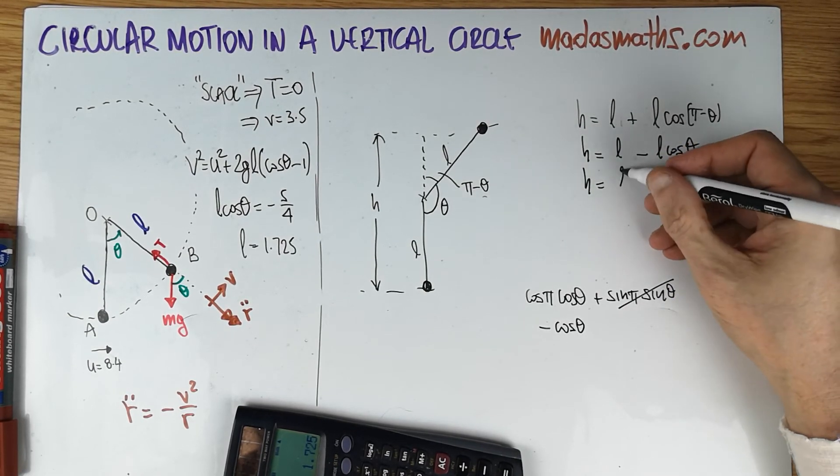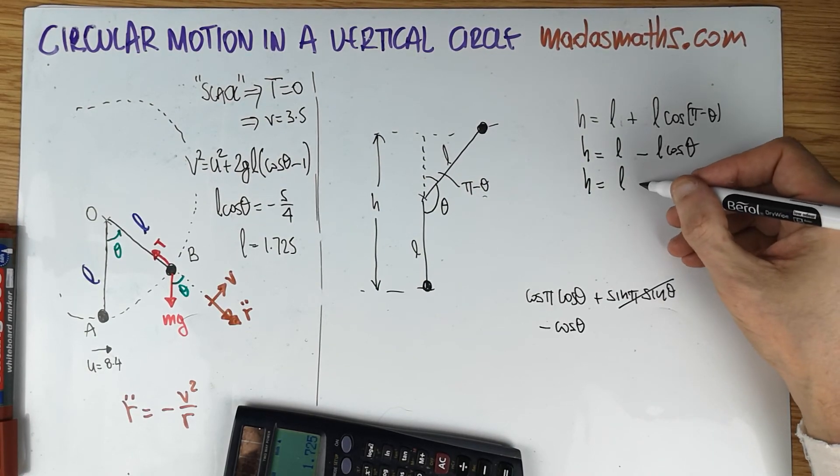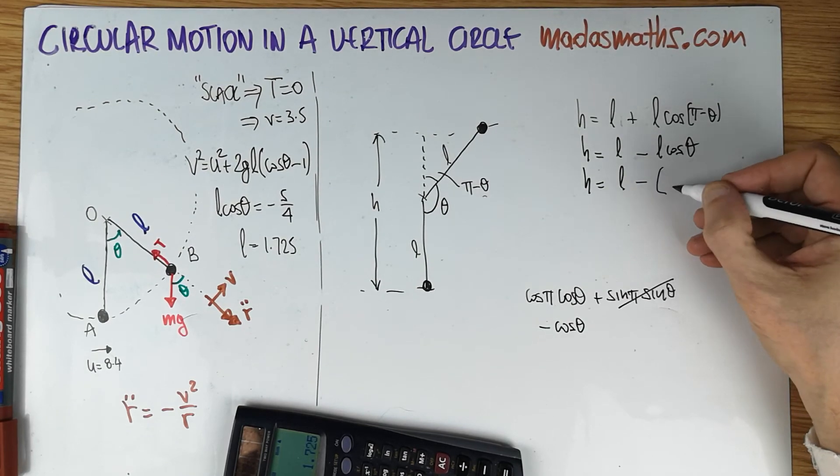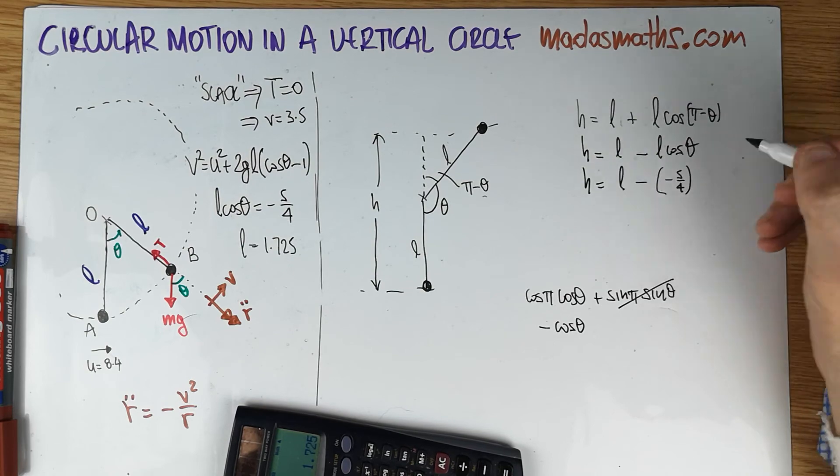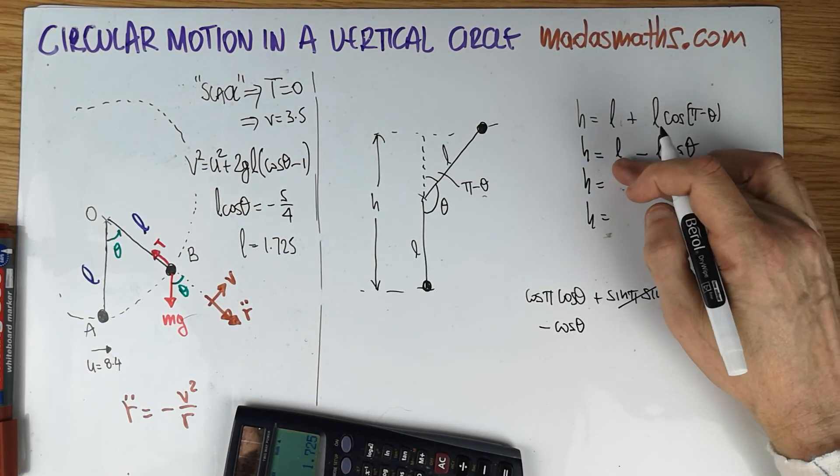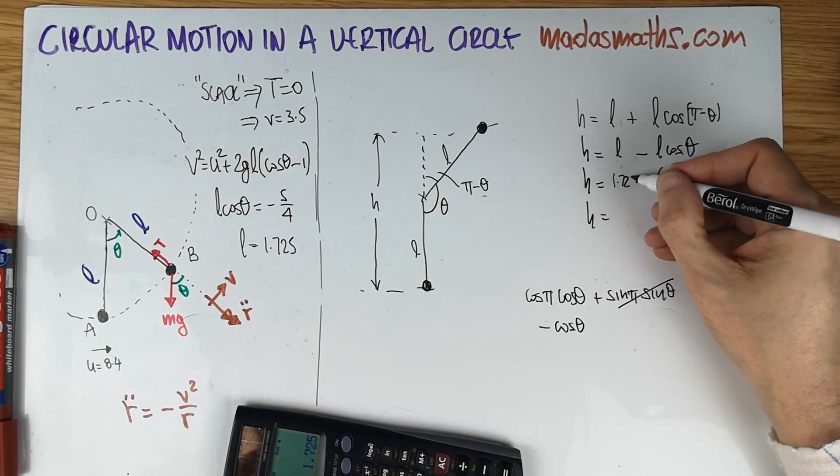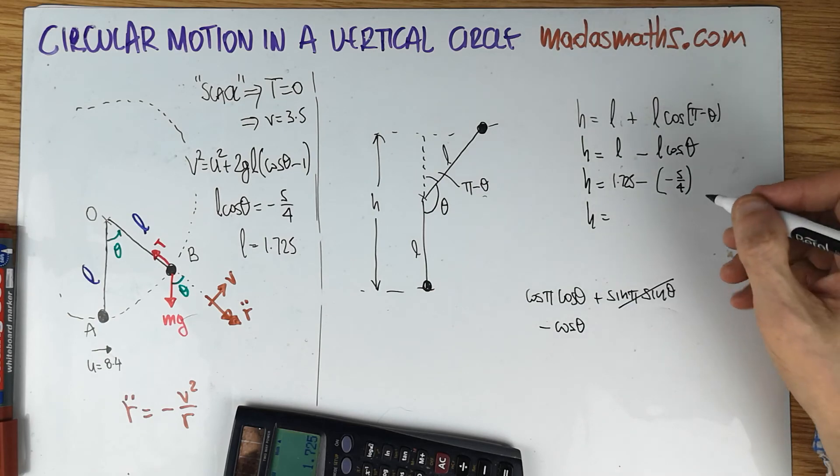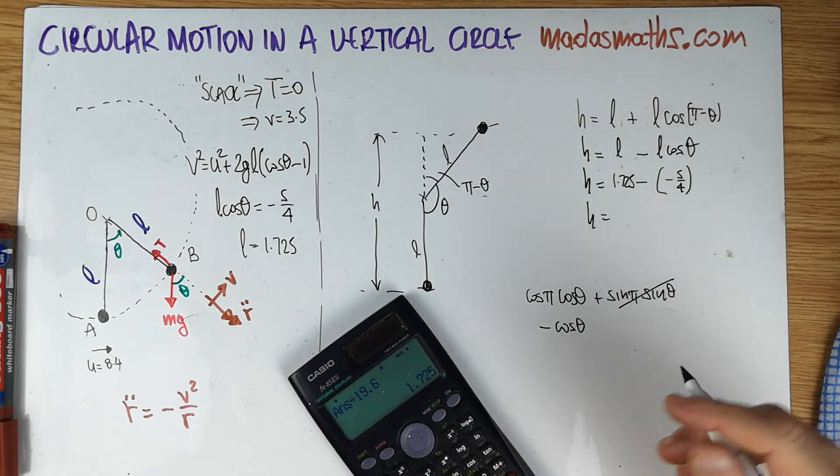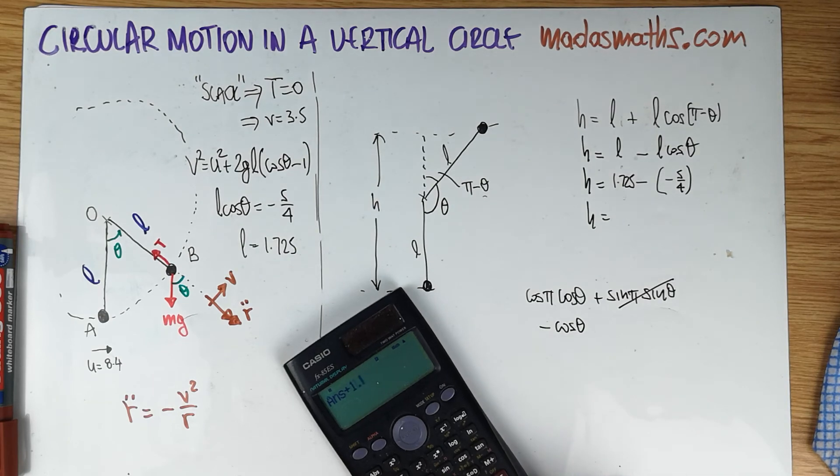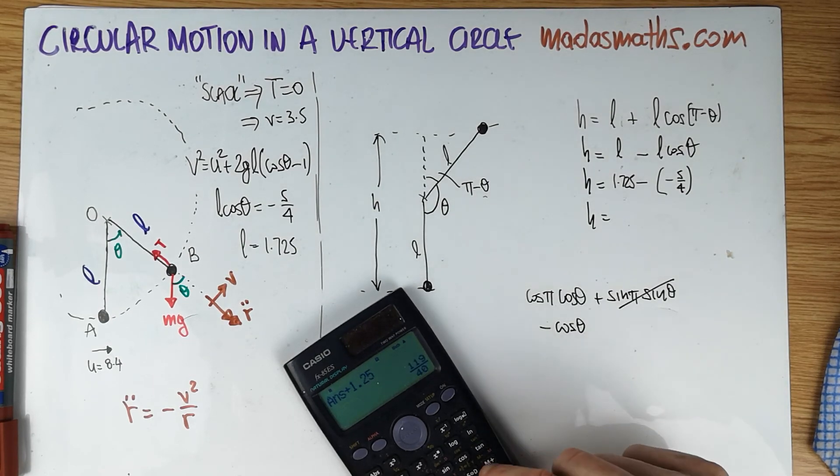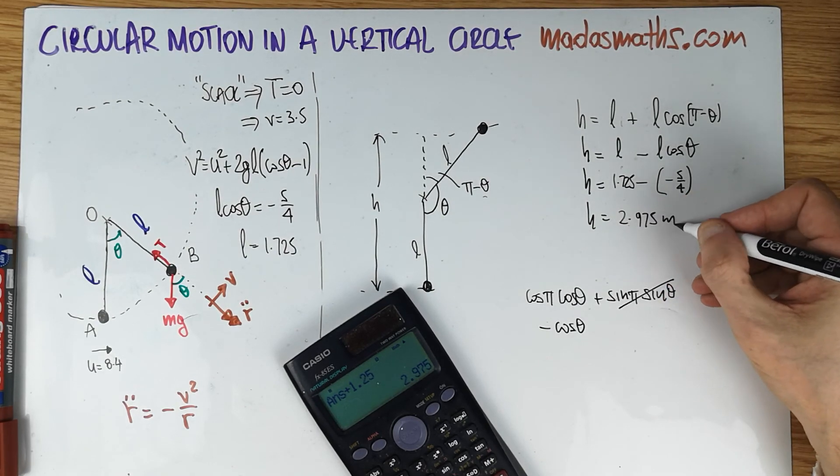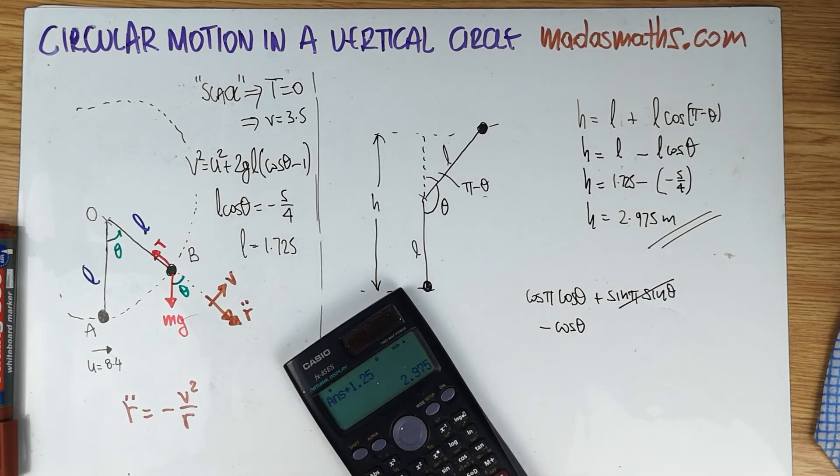And the H, of course, is L. And of course, L cos theta is minus 5 quarters. And L, I didn't put it in there. It's quite stupid really of me. This would be 1.725. And that combined was minus 5 quarters. And therefore, if we do that, it's that plus 1.25. And we will get something like 2.975 meters. And that's the answer to this particular problem.